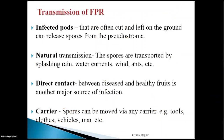Transmission of Frosty Pod Rot disease is due to the release of spores from the pseudostroma. Infected pods left on the ground can release spores — these are the main source of inoculum for spread. Natural transmission occurs when spores are transported by rainwater currents, wind, ants, and other animals moving through the estate.